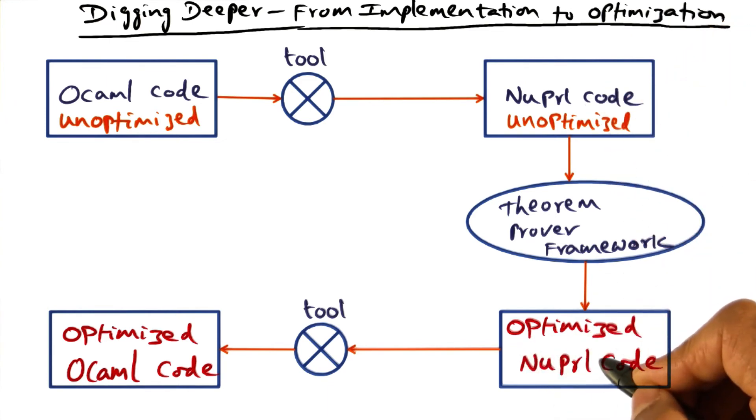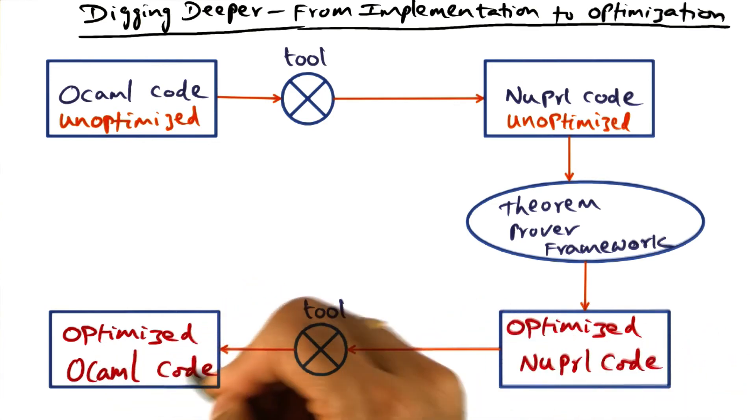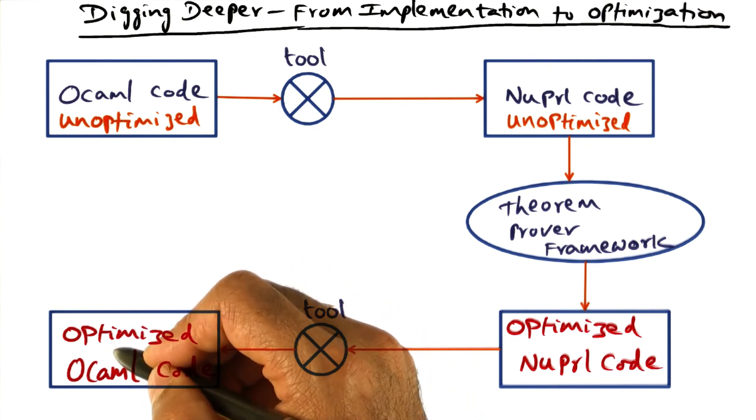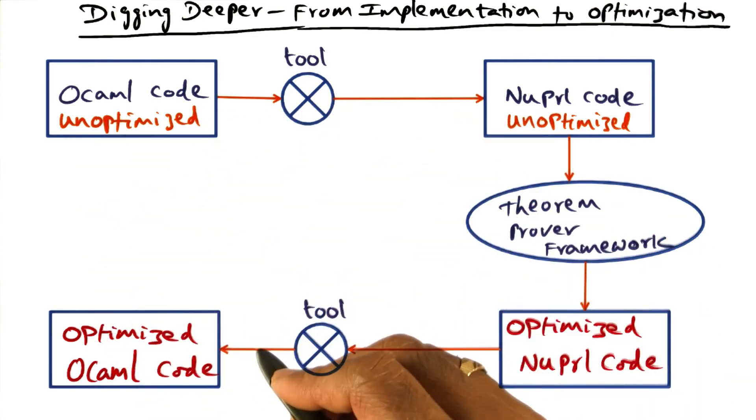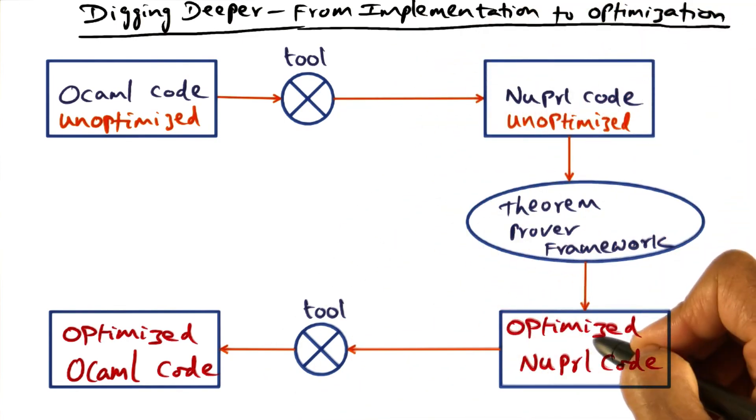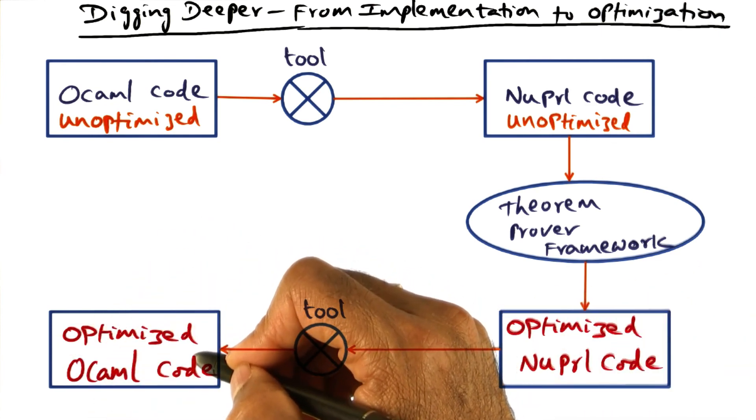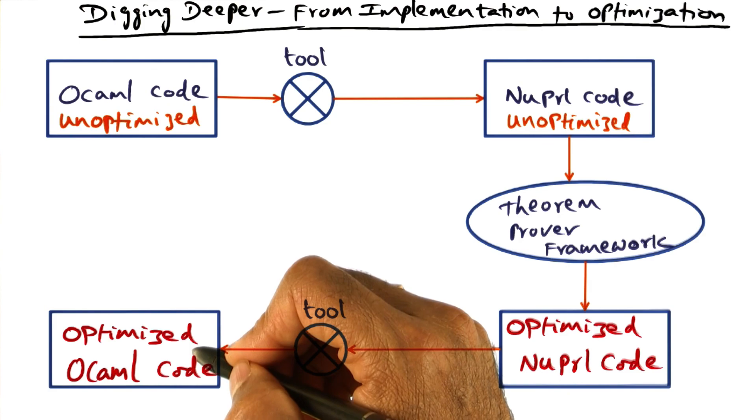Now once this step is completed, there is another tool that converts this optimized new PERL code back into the optimized OCaml code. Now we are ready to deploy this. So this is the design cycle going one full round, going from specification to implementation, implementation to optimization, and from optimization back to deployable code that we can then take and put it on the system.